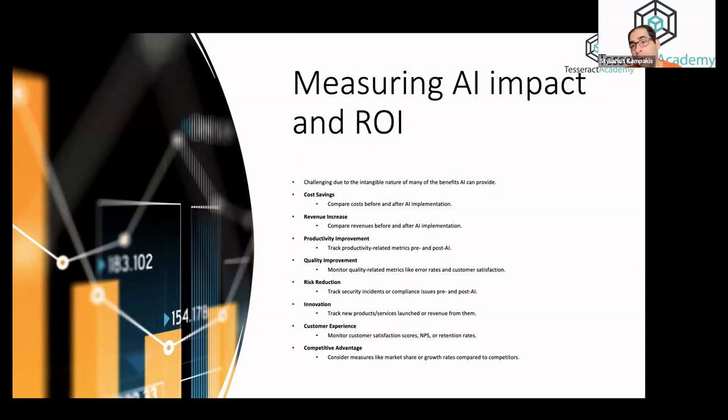All of these play a role into AI and how you position your unique technology. I believe the first few, cost savings, revenue increase and productivity improvement, are probably easier to communicate, they're easier also to sell in a way. Others like risk reduction, innovation, quality improvement, maybe they're a bit more subjective, more domain specific, but in one way or another, having at least one of them is going to help you pitch your startup in a more effective way.